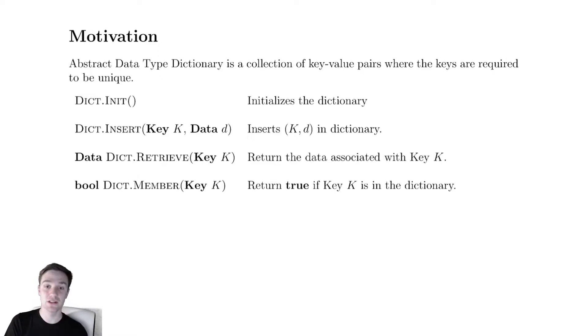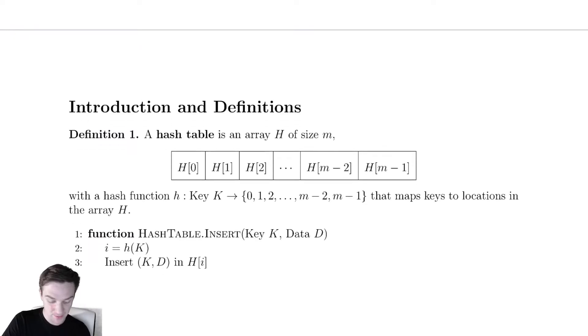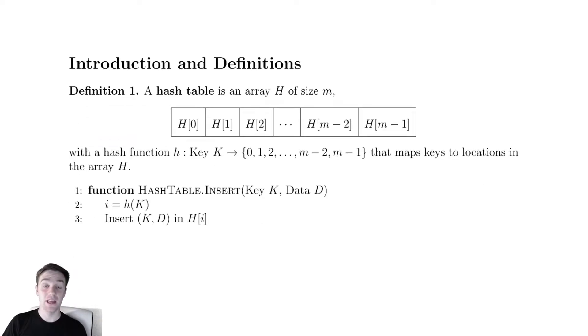We're primarily going to be interested in hashing and in particular hash tables is going to be our implementation of this abstract data type. So let's move on to talking about hash tables. A hash table is an array that stores these key value pairs and has a hash function that will allow you to figure out where you go in this array. So the elements of this array are going to be a key and some data and we know where those elements go by hashing the keys. We compute h of k. That gives us some value i. That value i is the location of that key in that array.